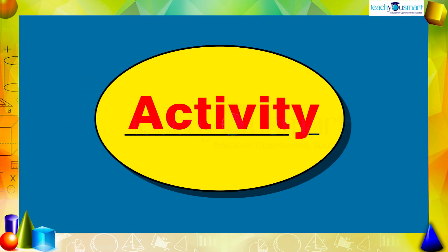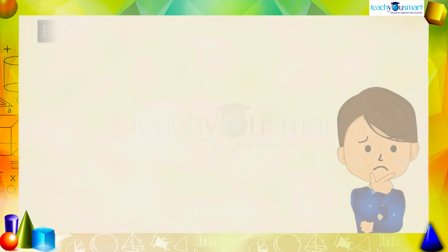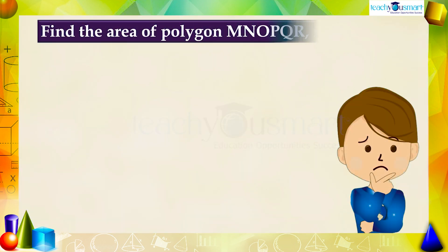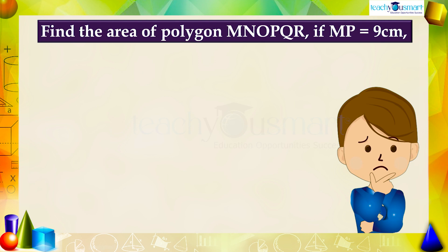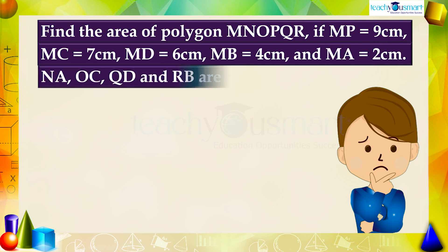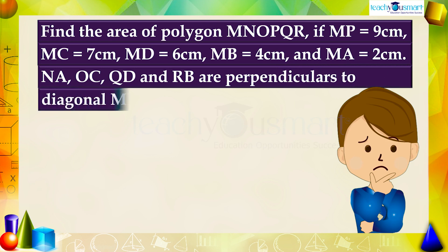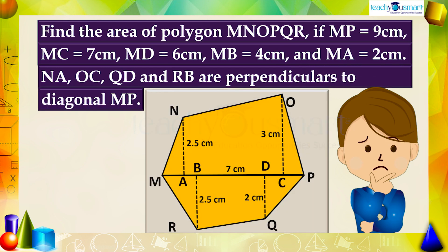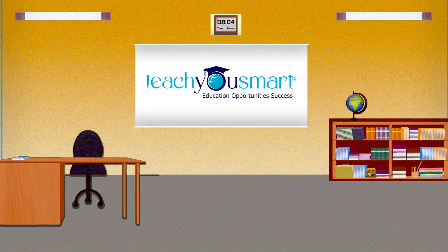Before winding up, let's check how much you understood by doing an activity. Find the area of polygon MNOPQR if MP equals 9 centimeters, MC equals 7 centimeters, MD equals 6 centimeters, MB equals 4 centimeters, and NA, OC, QD, and RB are perpendicular to diagonal MP. That's all for now, see you in the next class.